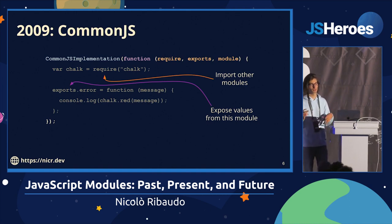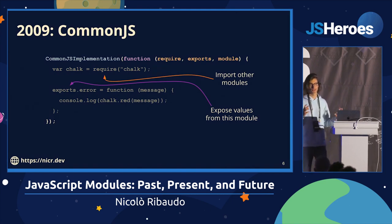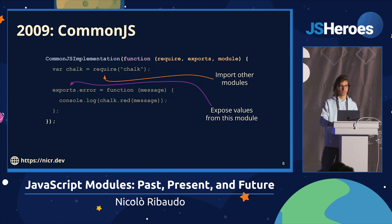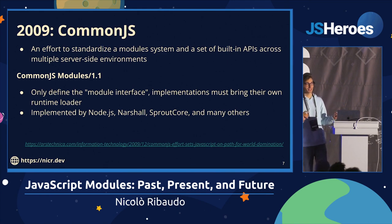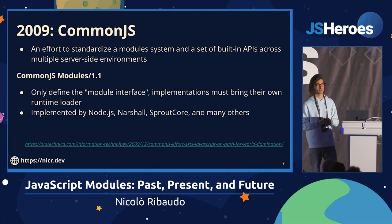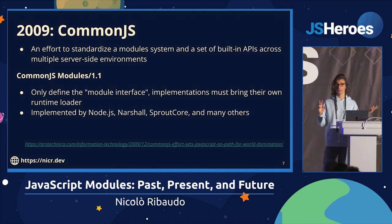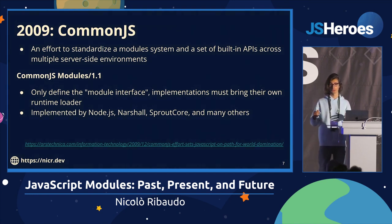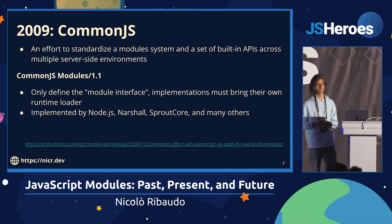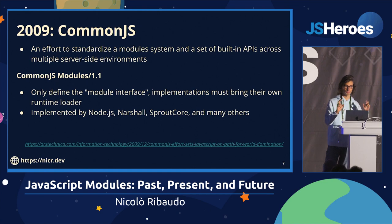CommonJS, the first popular module system for JavaScript, has this require function to load dependencies and an exports object where we assign values to export from our file. All modules are self-contained — no globals anymore. Under the hood, this is just wrapped in a function that provides require and exports. You just write your module and something else, like Node or Webpack, will wrap your code in this function to execute it, providing the correct variables.